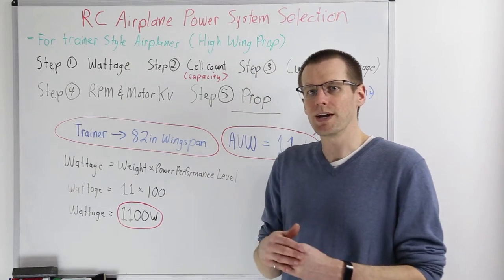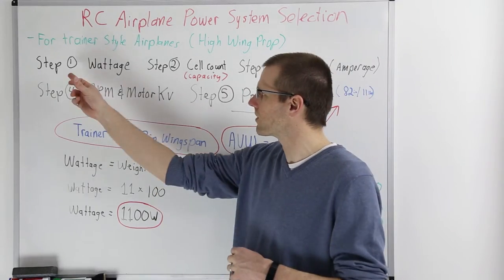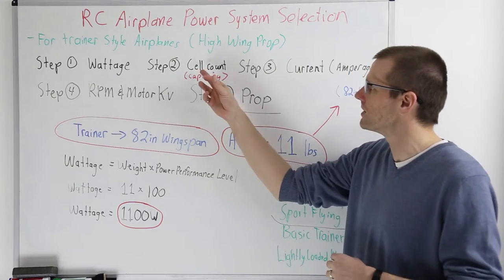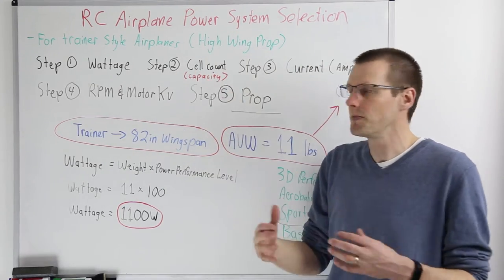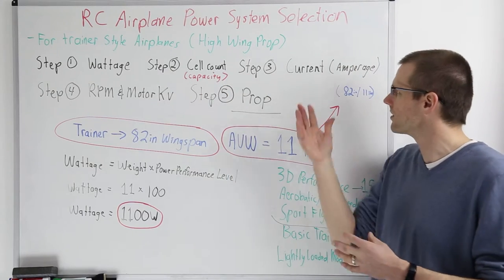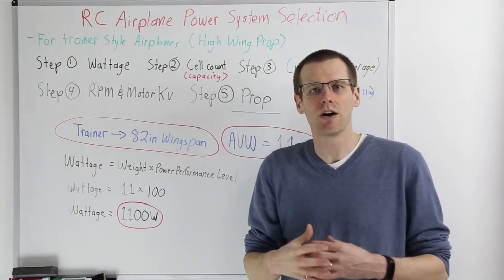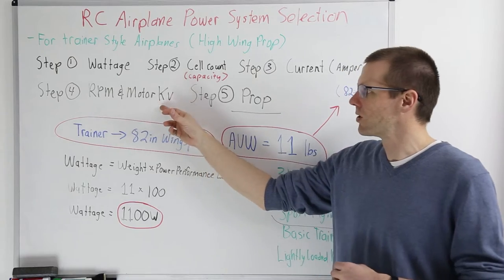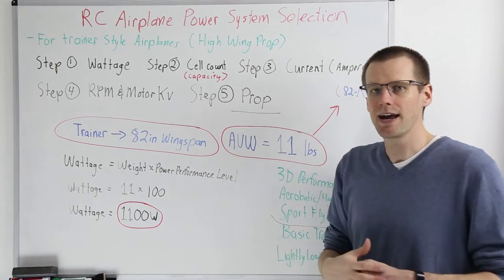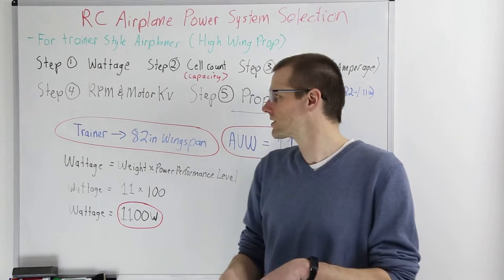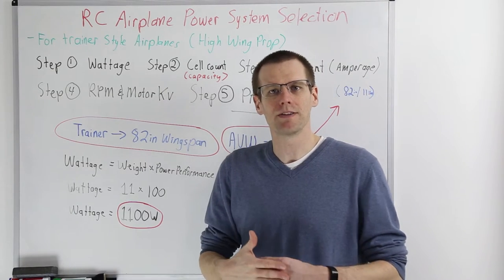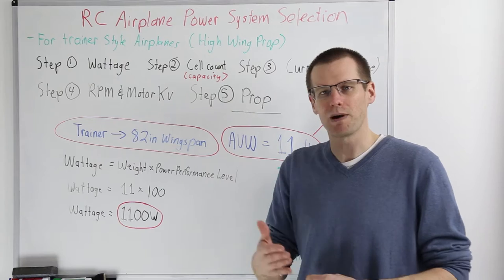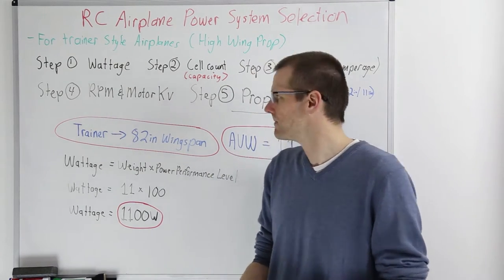We're going to break this down into approximately five steps. Step one works out the wattage — how much power we need for our airplane to have a good flight. Step two is the cell count and possibly capacity. Step three deals with current in amps. Step four covers RPM and motor KV. Step five is selecting a propeller that's safe to start with — not necessarily the final prop. Propellers are cheap, so buy a few and test them to determine which is best for your setup.